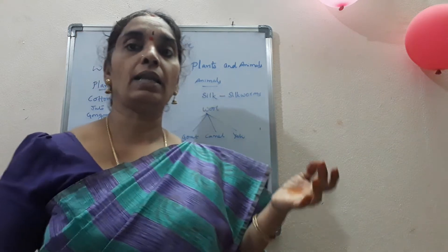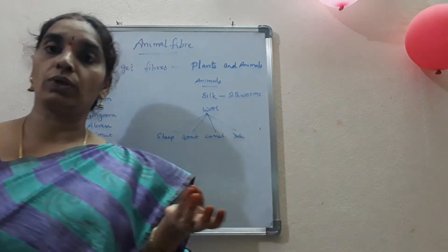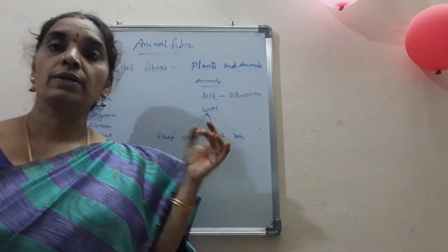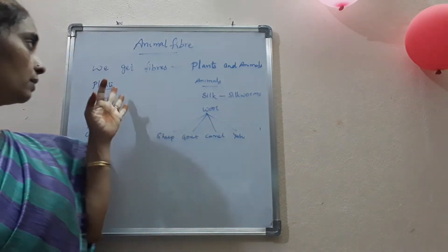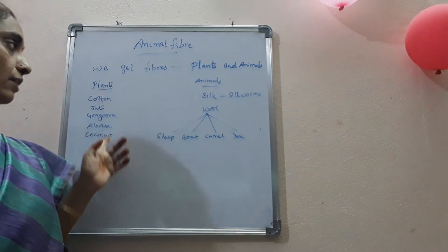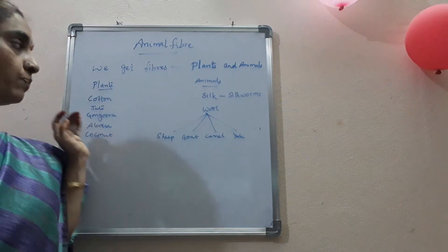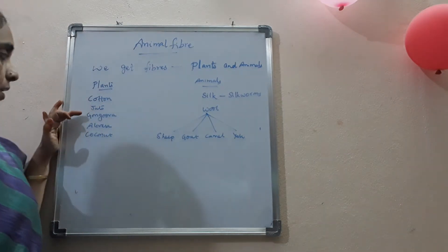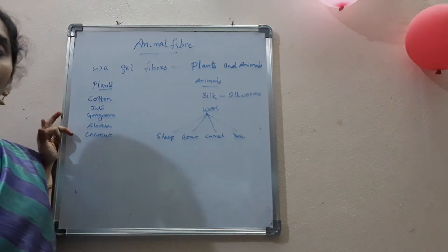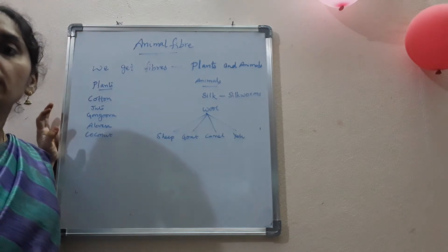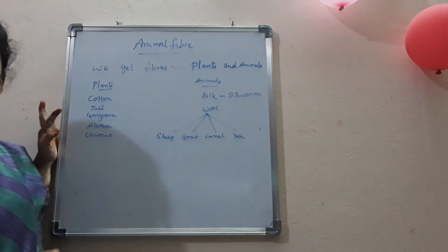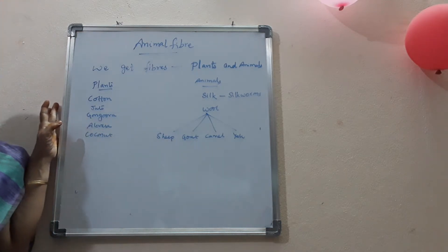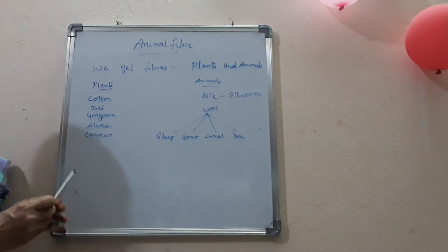So plant fibers are, as you know, coconut, cotton, and jute. See here children — cotton, jute, gongura, aloe vera, and coconut. So these are the fibers that we get naturally.